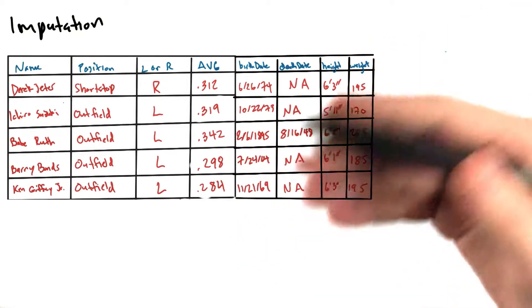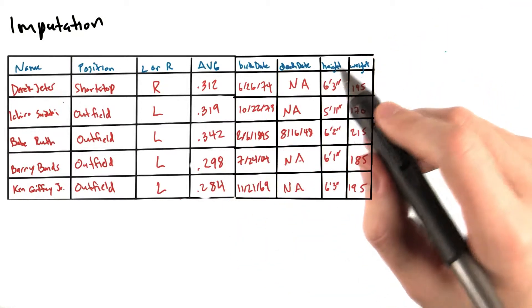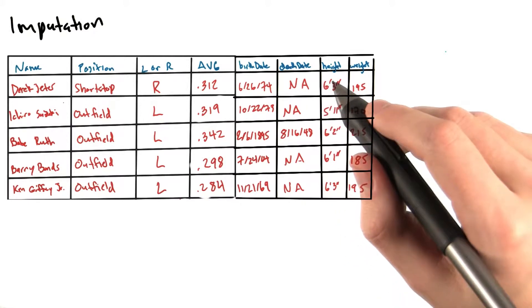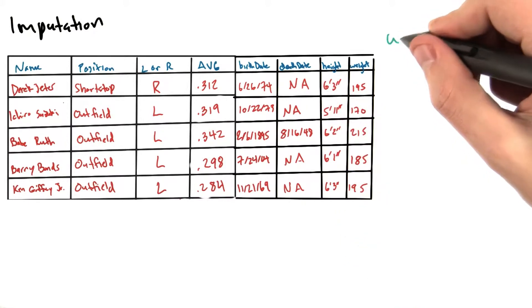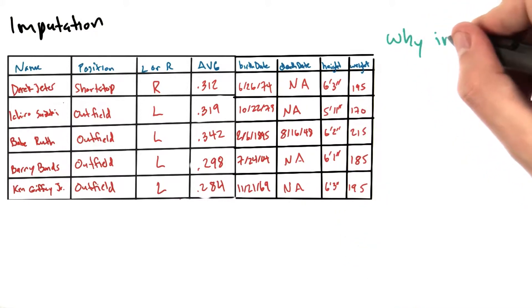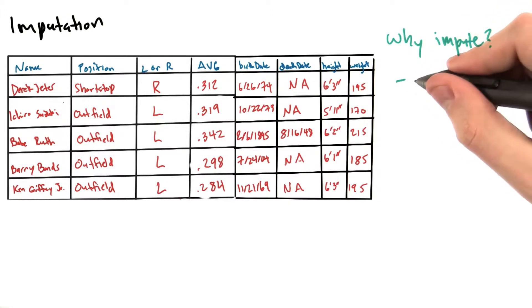In scenarios where we don't have very much data, or where removing our missing values would compromise the representativeness of our sample, it might not make sense to throw away a bunch of our entries just because they're missing values. This could severely impact the statistical power of whatever analysis we're trying to perform.